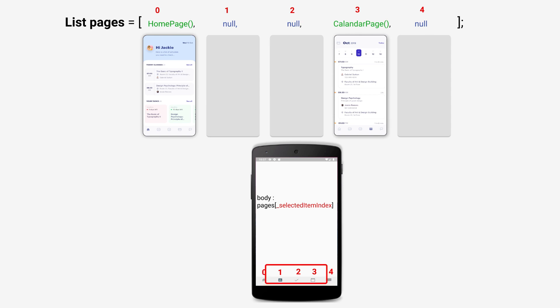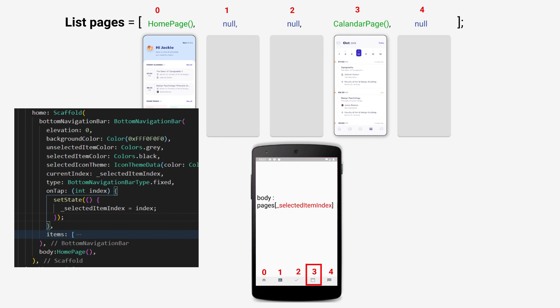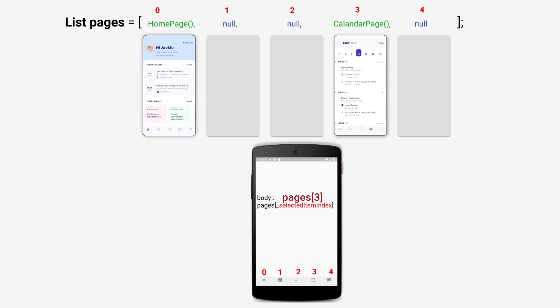So, when the user taps on an item in the bottom navigation bar, we retrieve the index of this item and assign it to the selected item index variable, as we did here. Then, the body property of the scaffold, instead of receiving one specific class as we did here, will receive pages at selected item index. That means, when the user taps on the fourth item, the selected item index will receive the value 3. Then, on setState, the body property of the scaffold will receive the value of the page list at index 3, which is the calendar class.